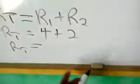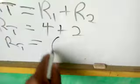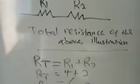I hope you are seeing it very carefully. This is the R1 which is 4, and so here R1 plus R2 which is 2. So what we do is that we just add them, 4 plus 2, we have 6 ohms.